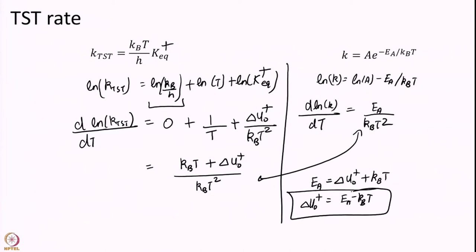So, remember this fact actually internal energy is not exactly the same as potential energy. Internal energy also remember has average kinetic energy included in it. And because of that average kinetic energy you get this factor of KT. So, EA and delta U naught are not same. That is number one point.